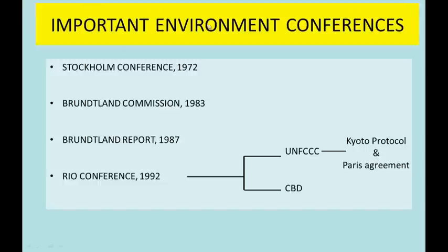There have been a number of important environmental conferences around the world. The very first ever conference on environmental matters was the Stockholm Conference of 1972. In this conference, international leaders discussed persisting environmental problems for the first time. From India, Indira Gandhi, who was prime minister at that time, attended the Stockholm Conference. Later in 1983, the Brundtland Commission was formed to find an appropriate model of development that could be followed across the world.